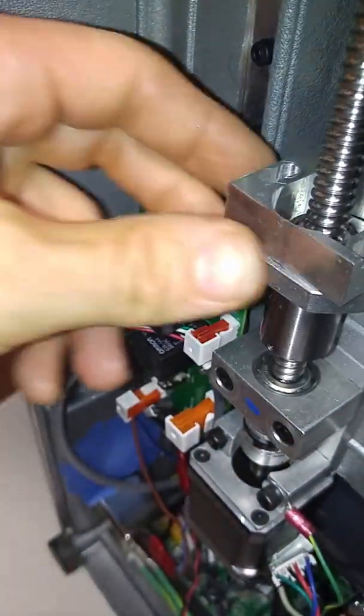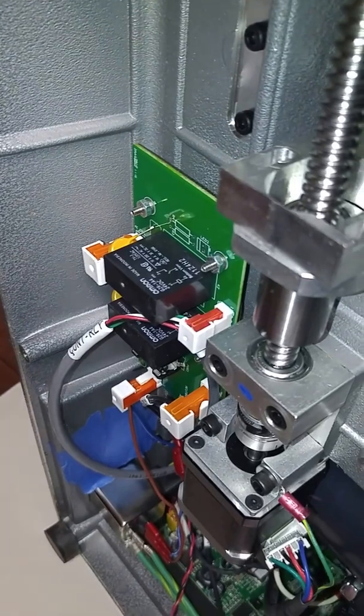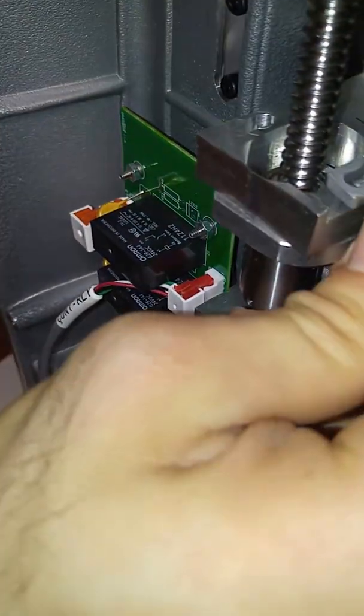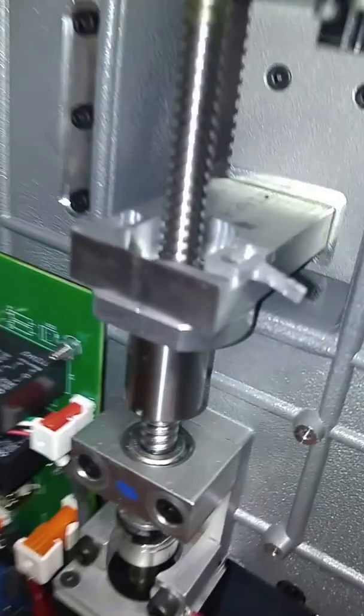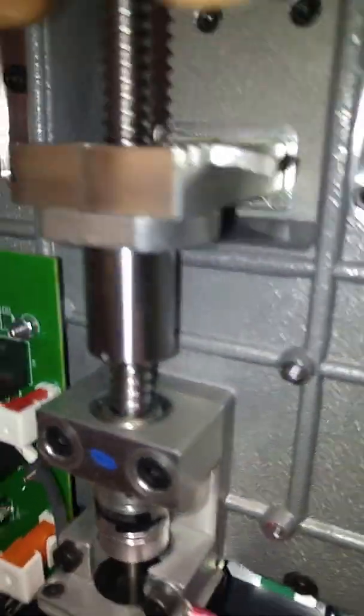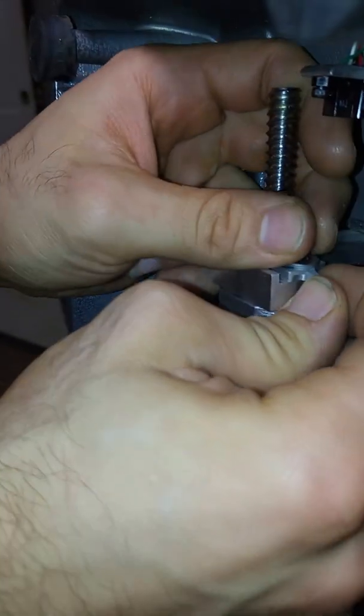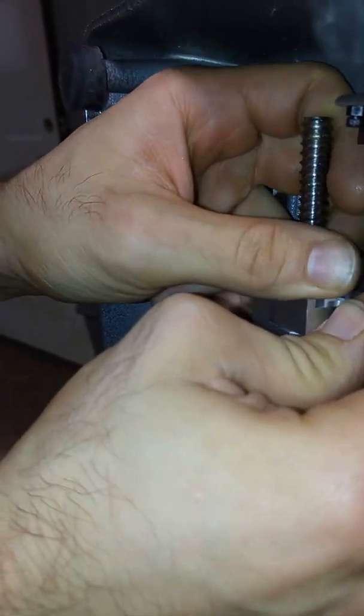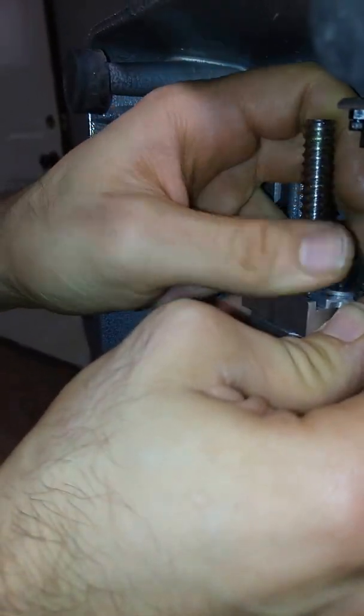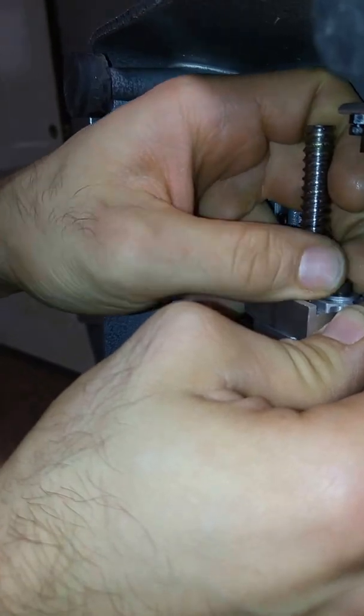But I want to take this needle here and put it back on the same way that it was earlier with the bend going down. Put my screw in there, I'm going to tighten it almost all the way, and then I'm going to slide it up.